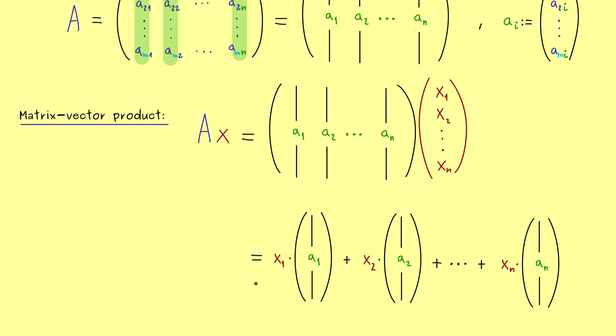Indeed, this is how you can nicely remember the matrix vector product. You multiply this component with the first column, then the next component with the next column, and so on, and in the end you sum all of them up.